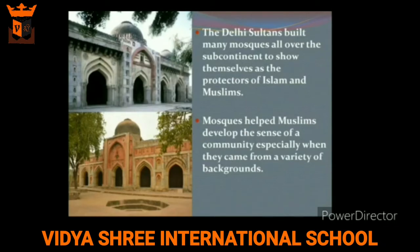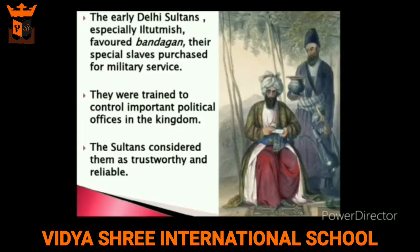The Delhi Sultans built many mosques all over the subcontinent to show themselves as protectors of Islam and Muslims. A mosque is called a masjid in Arabic. Mosques helped Muslims develop a sense of community, especially when they came from a variety of backgrounds.